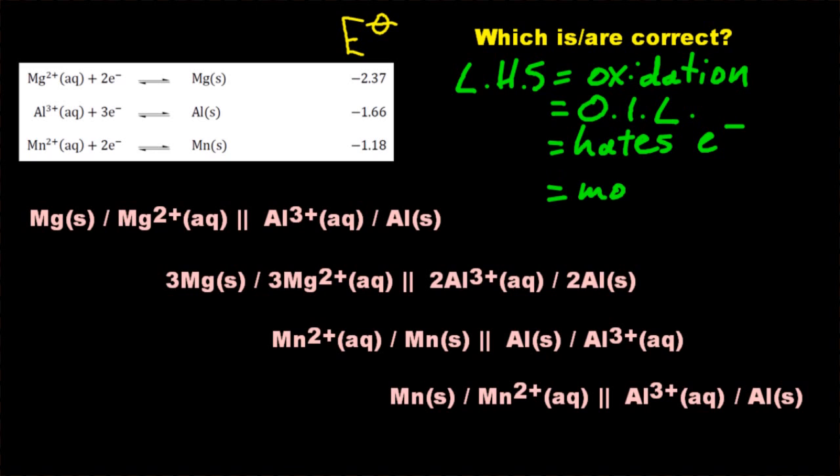So it's going to have the most negative e-cell. So let's look at these four then. Let's check the first one: is the magnesium half-cell higher than the aluminium half-cell? Yes it is, higher up on the list, a more negative e-cell. And are both aqueous solutions next to the salt bridge? Yeah, that one's good.